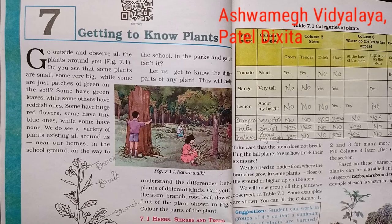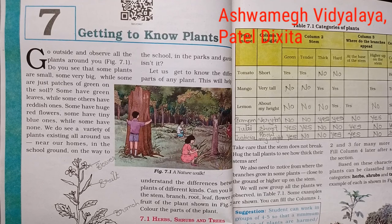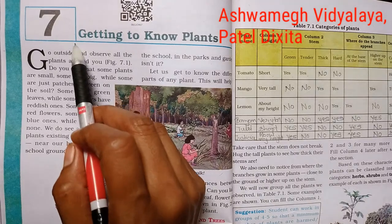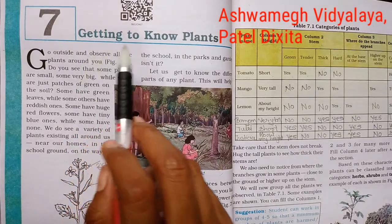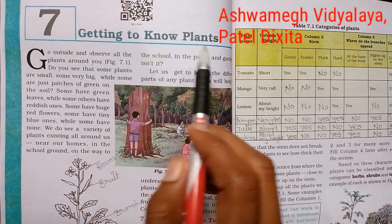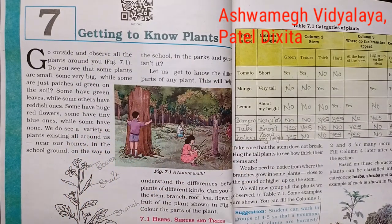Hello friends, myself Patel Diksita from Ashwami Kvidyalai, Killa Padi. Today we are discussing Standard 6, Subject Science Unit No. 7, Getting to Know Plants.